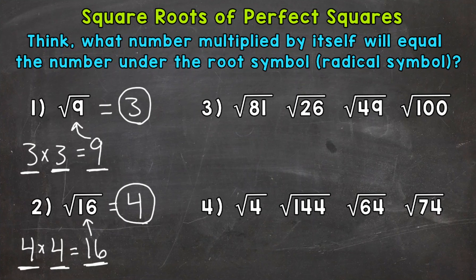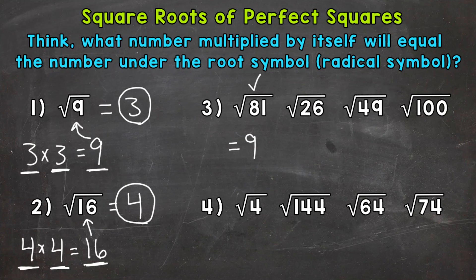Let's move on to numbers 3 and 4, where we have 4 square roots for each. Three of the four will have square roots of perfect squares, meaning they have a whole number answer, and one will not work out so nicely. Starting with number 3: the square root of 81. 9 times 9 equals 81, so 81 is a perfect square and the square root of 81 equals 9.